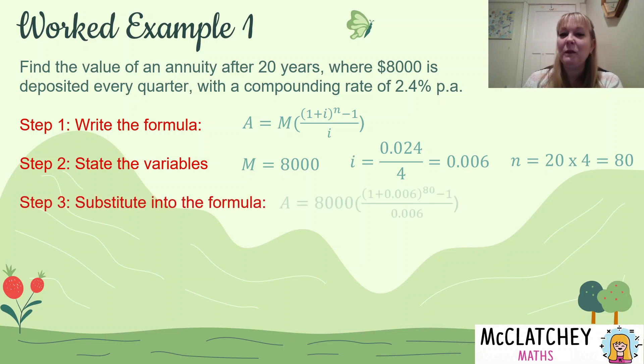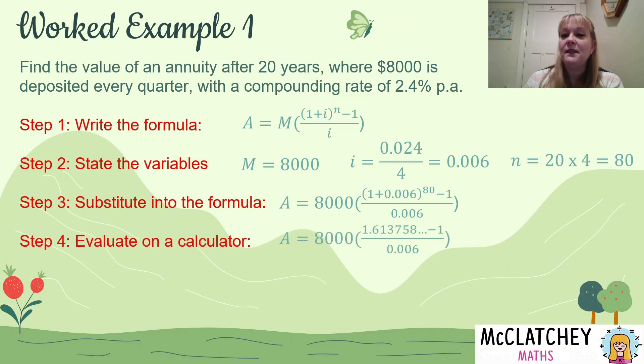Okay, next we substitute into the formula. So we write it down with all our variables added into the formula. It's always a good idea, especially if you're not great on a calculator, to maybe do the first step. So the first step there is adding 1 plus 0.006. And then what we do is raise that to the power of 80.